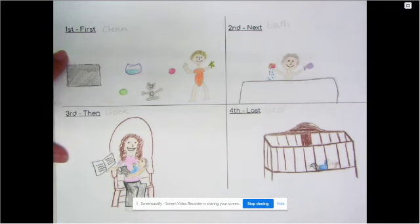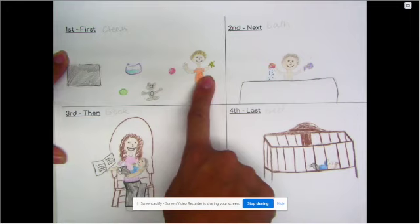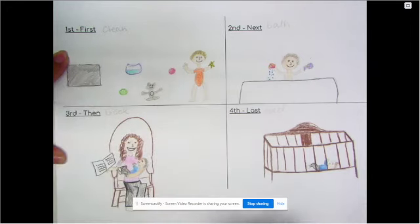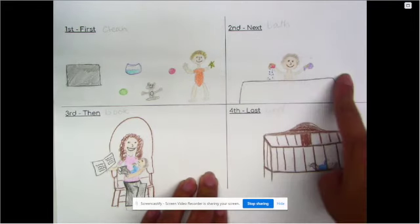First we clean. He's got to clean up all his toys. So here are some of his toys. Here's Jacob and this is his toy box. So he's cleaning up his toys. Then, or next, he takes a bath.